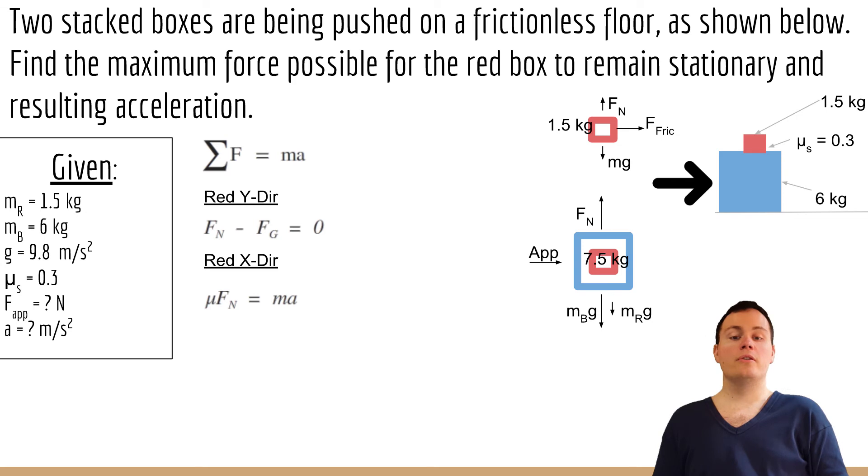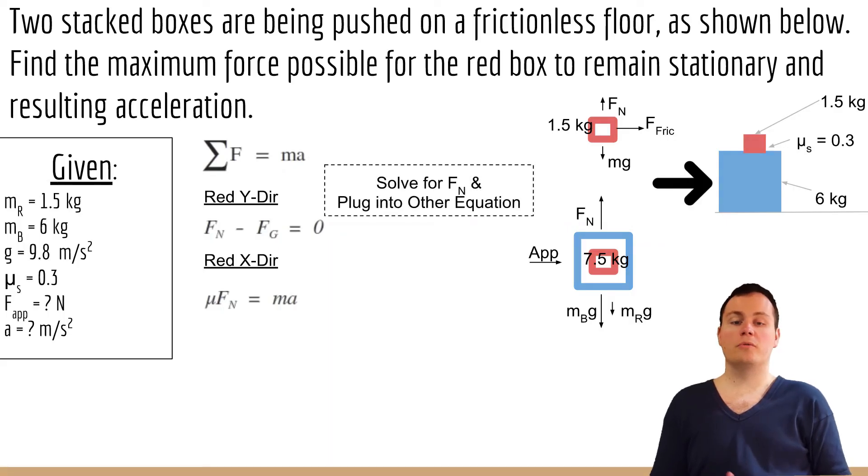In the x direction we know that there is the force of friction and that's the only force. Since the red block is accelerating, we know that it's going to be equal to mass times acceleration. Then we just have to solve for the normal force and plug that into the other equation. When we do we get a very similar looking equation. Then we just solve for the acceleration and plug in what we know, and when we do that we find that the acceleration is equal to 0.56 meters per second squared.